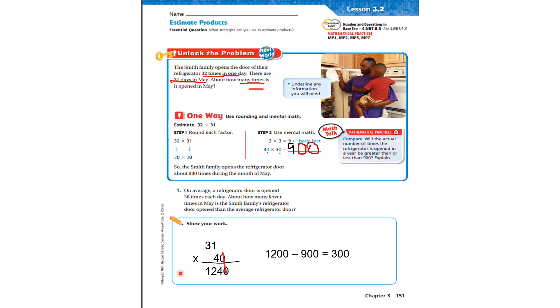The first thing we can do is we can estimate. We can use rounding and mental math. So we're going to estimate 32 times 31 as 30 times 30. Well, once we have 30 times 30, we can take the basic fact of 3 times 3 is 9. And then 30 times 30, 900. Remember, if the two numbers you're multiplying end with 0, you can just add it to the basic fact. So the Smith family opens the refrigerator door about 900 times during the month of May.